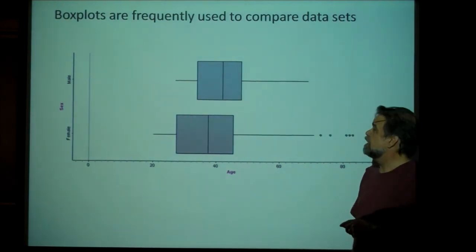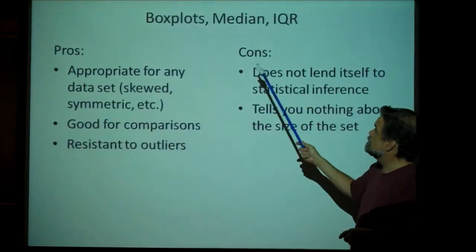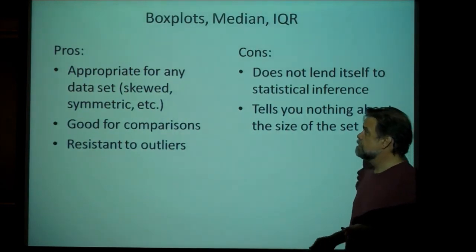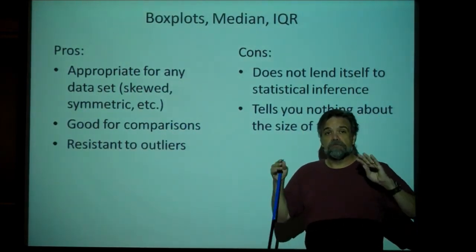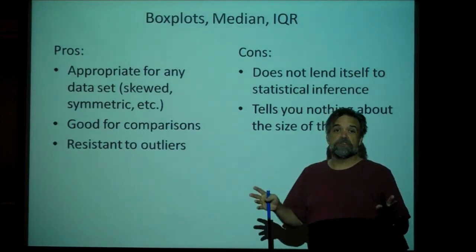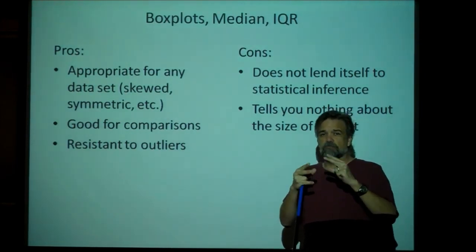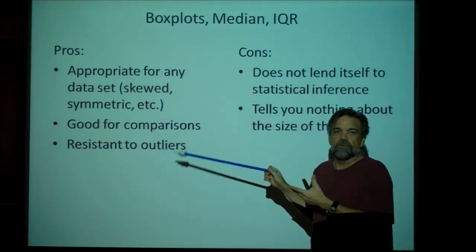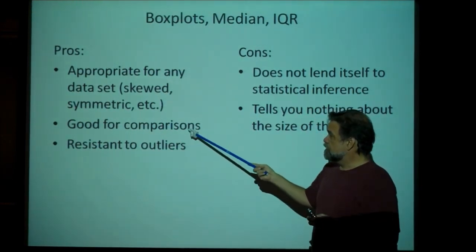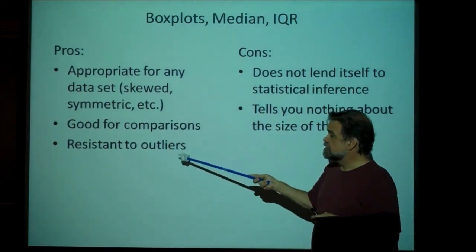So, to summarize, box plots, medians, IQRs, the pros. Well, one pro is, it's appropriate for any set of data, even weirdo sets of data. Even data sets that are really skewed to the right or really skewed to the left. This works. It's good for making comparisons and it's resistant to outliers.